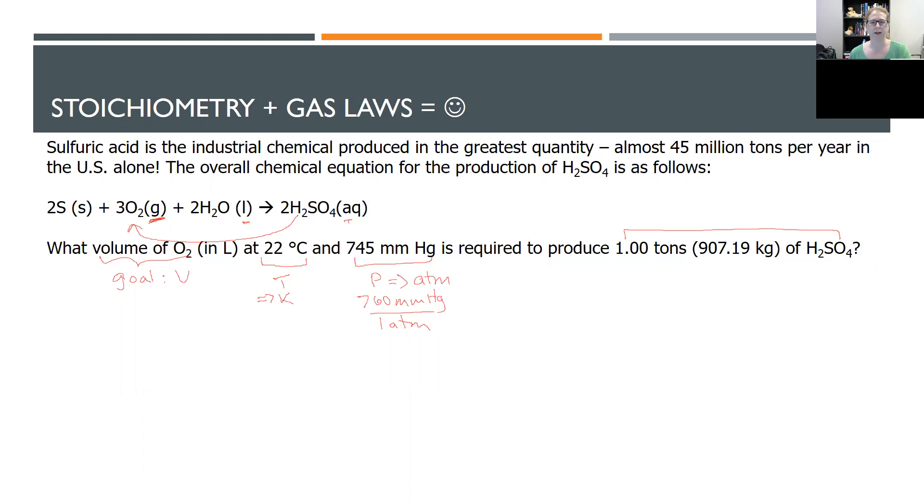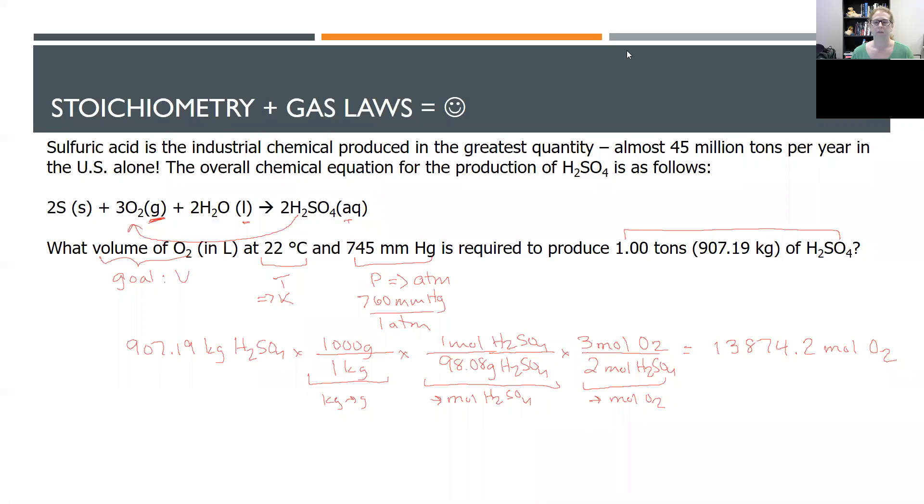So let's set up the stoichiometry problem first. Pause the video and see what you get. All right. I hope you have a setup like this. First off, we need to go from kilograms to grams. Second off, we need to go to moles of H2SO4. Why? Because then we need to go to moles of O2, right? Always grams to moles and then moles of A to moles of B. And when I do that math, I get a pretty large number of moles of O2.